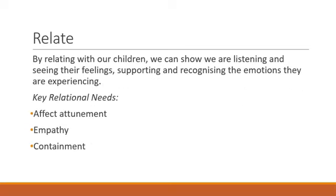The next element is relate. By relating with our children, we can show that we are listening and seeing their feelings, supporting and recognising the emotions they are experiencing. One key relational need is affect attunement — having the ability to meet the child's emotional intensity on an energetic level to show that we are connecting with them in that emotion. So if they're feeling cross and angry, we're not going to mirror that back to them, but we will mirror the intensity of that emotion. We might use a stronger voice: 'I can see you're really cross, and I would be cross too if I were you.' We're not matching the anger, but showing them that we understand how they're feeling.